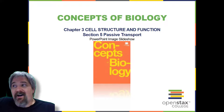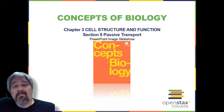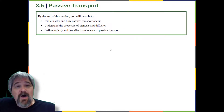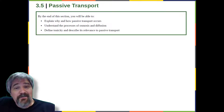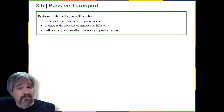Welcome back to Section 5 of Chapter 3, Passive Transport. By the end of this section you will be able to explain why and how passive transport occurs, understand the processes of osmosis and diffusion, define tonicity, and describe its relevance to passive transport.